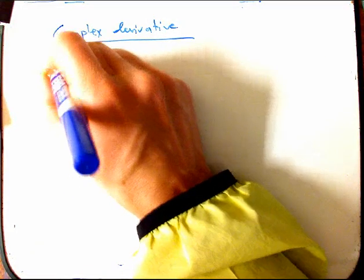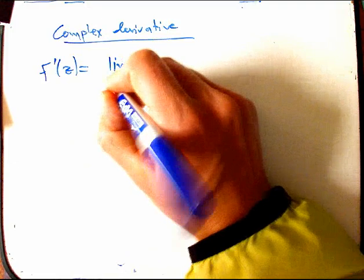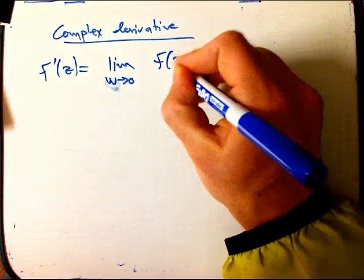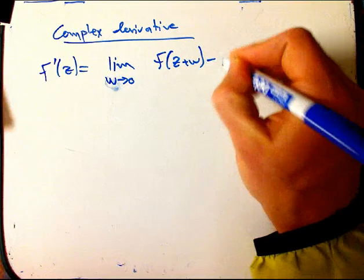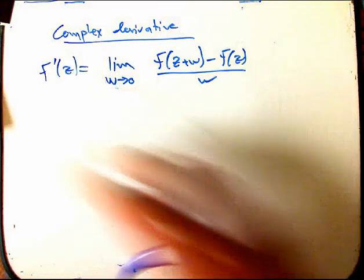Okay, the f prime of z, if f is a function, f prime of z is supposed to be the limit as w goes to zero of f of z plus w minus f of z over w. Exactly the same definition as usual.